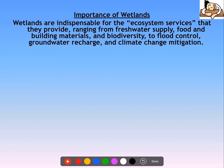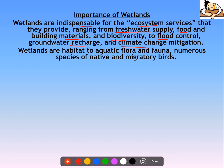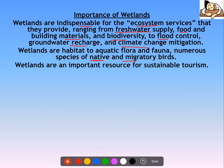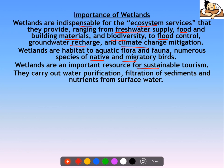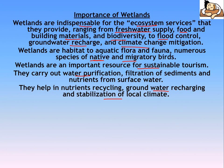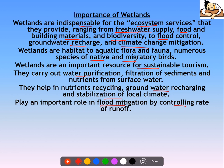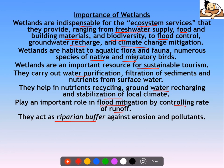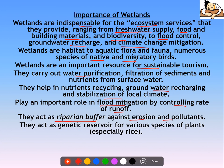Wetlands are indispensable for the ecosystem services they provide, ranging from fresh water supply, food and building materials, biodiversity, flood control, groundwater recharge, and climate change mitigation. They are habitat to many plants and animals, including native and migratory birds. They are an important resource for sustainable tourism, carry out water purification and filtration, aid in groundwater recharge, stabilize local climate, and play an important role in flood mitigation by controlling the rate of runoff. They also act as a riparian buffer against erosion and pollutants, and serve as a genetic reservoir for various plant species — especially rice, since paddy is grown in wetlands.